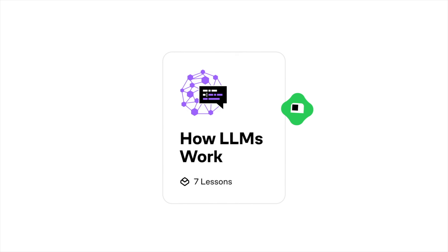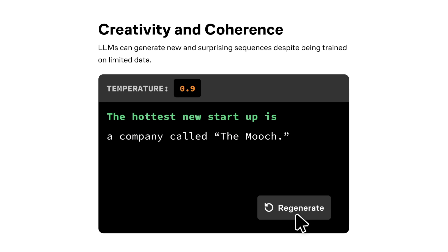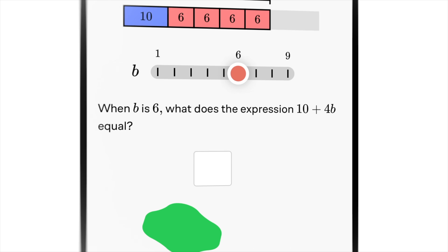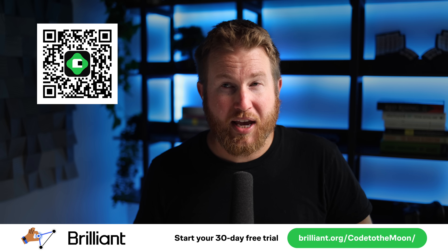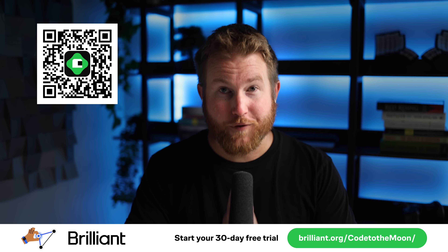Before we go, I want to talk about this course I've been taking on quantum computing — it's from the sponsor of this video, Brilliant. I've been working my way through it and so far it's been really, really good. Some of the concepts in quantum computing are pretty challenging, and the Brilliant course has really helped me understand them. Brilliant distinguishes itself by putting an emphasis on learning by doing. If quantum computing is not your thing, they have thousands of interactive lessons in math, data analysis, programming, and AI — skills that can really help give you an edge in this industry. Brilliant makes mobile devices first-class citizens, so you can jump back into your favorite courses on the go. To try everything Brilliant has to offer for free for 30 days, visit brilliant.org/codetothemoon or scan the QR code on screen. You'll also get 20% off an annual premium subscription. Thank you to Brilliant for sponsoring this video.